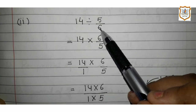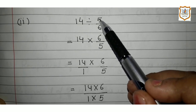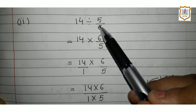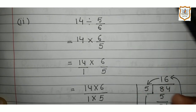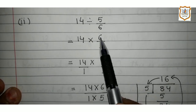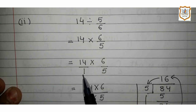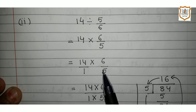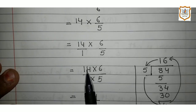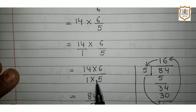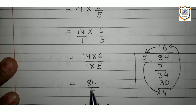This numerator will become denominator and this denominator will become numerator. So, the reciprocal of 5 upon 6 is 6 upon 5. Now, the sum will be 14 multiplied by 6 upon 5. Let's solve 14 multiplied by 6 upon 5 — we will put 1 as a denominator under 14. So, 14 upon 1 multiplied by 6 upon 5. According to the formula, numerator is multiplied by numerator and denominator is multiplied by denominator. So, 14 multiplied by 6 upon 1 multiplied by 5.